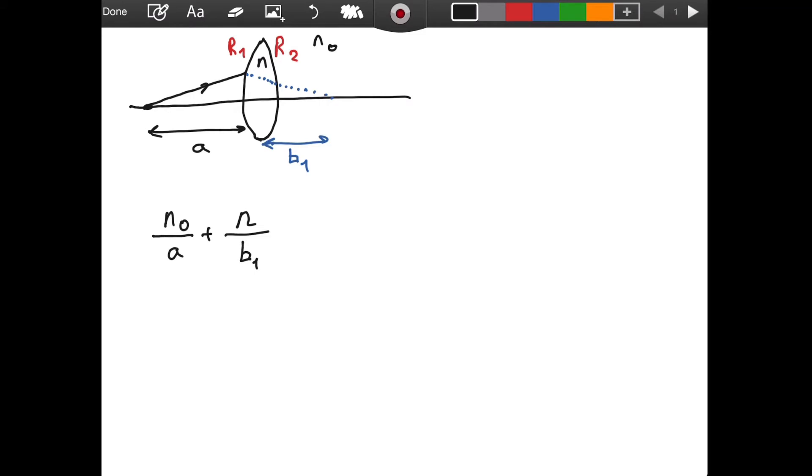n₀ divided by a plus n divided by b₁ is equal to n minus n₀ divided by the radius of curvature r₁. So, this comes from the formula that I already derived in one of my previous videos.